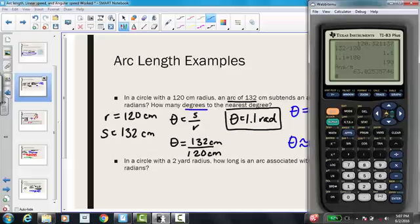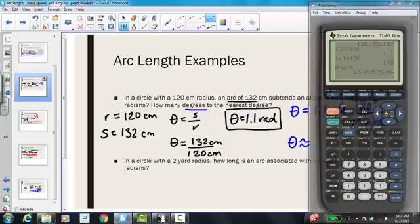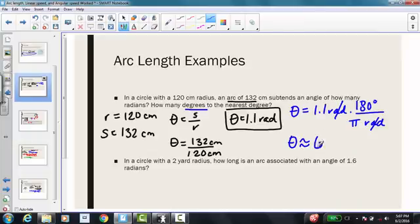Try to always use the pi button and not 3.14, as it may affect your rounding. So here we're given 63.03, but it says round to the nearest degree, so that's going to leave me with theta is approximately 63 degrees.